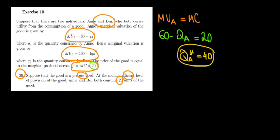Now let's solve it also for Ben. The marginal utility of Ben must equal the marginal cost of the good. We know that the marginal utility of Ben is 100 minus 3 times the quantity. So 100 minus 3 times the quantity that Ben consumes equals the marginal cost, which is 20 euros.